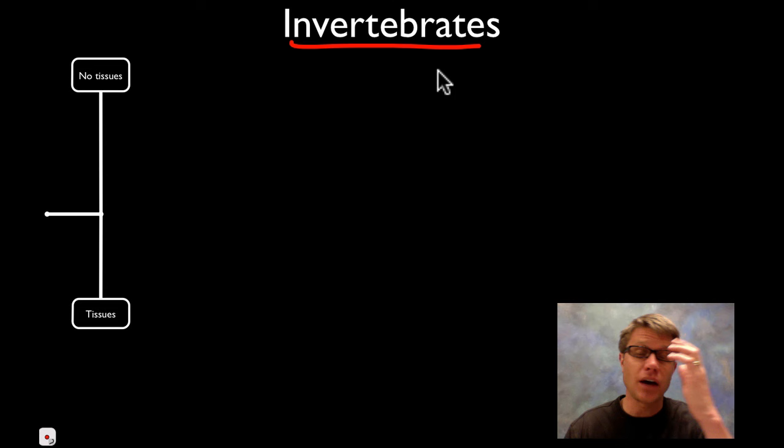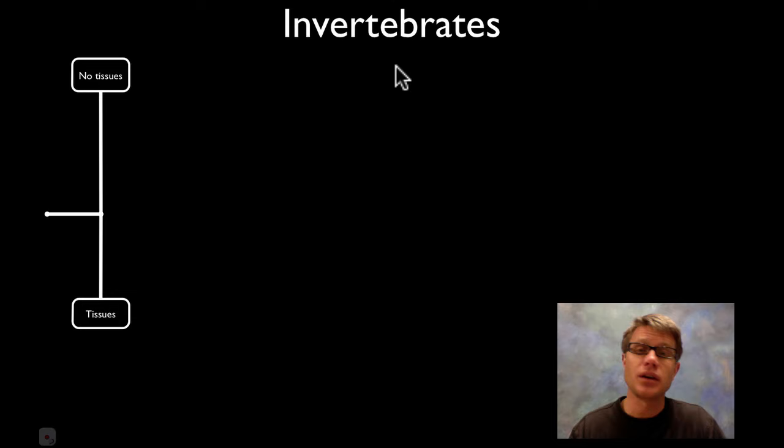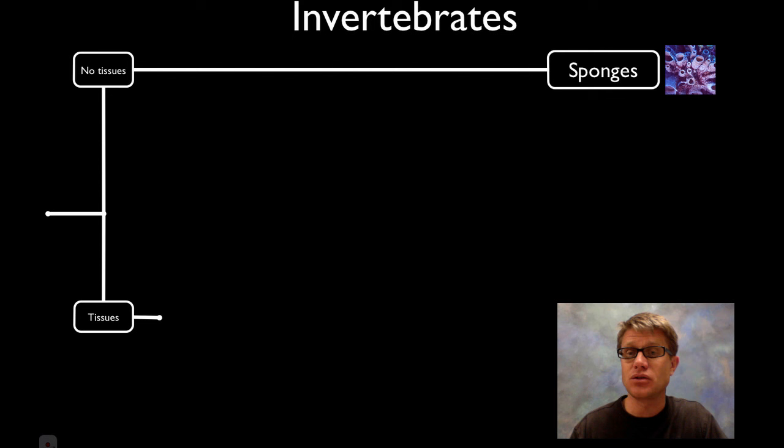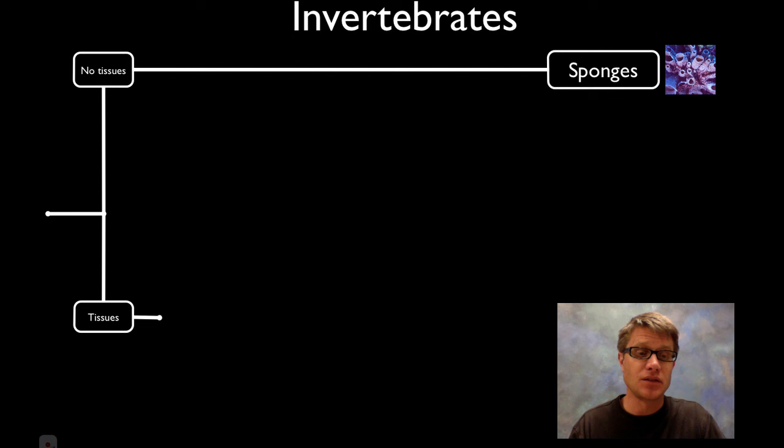I'm going to walk you through how we classify the invertebrates — things that don't have a vertebral column or spinal cord. The first thing we do is separate those that have just a bag of tissues from those that have true tissues. Those that have a bag of tissues are what we call sponges. Sponges are just an amalgam of a bunch of different cells.